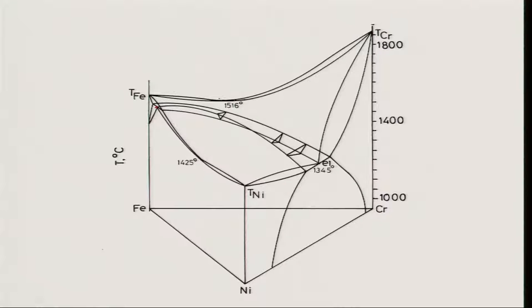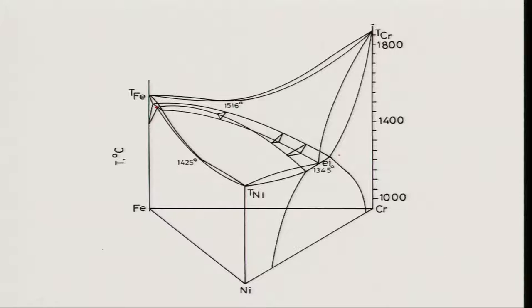Between iron and nickel there is a binary phase diagram with a peritectic reaction at the iron end. Between nickel and chromium there is a eutectic reaction at around 1345 degrees Celsius. Between iron and chromium there is an isomorphous phase diagram with a congruent melting point at about 1516 degrees Celsius. Chromium melts above 1900 degrees Celsius, iron at 1539 degrees, and nickel at about 1455 to 1460 degrees Celsius.